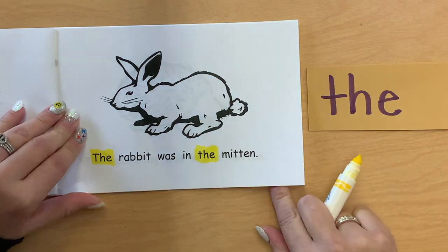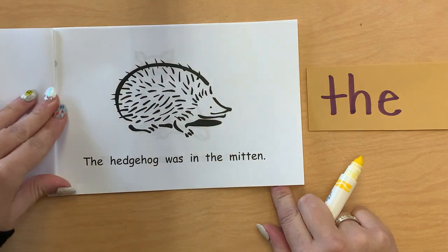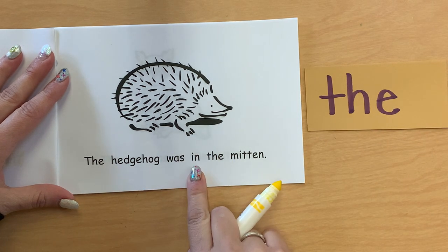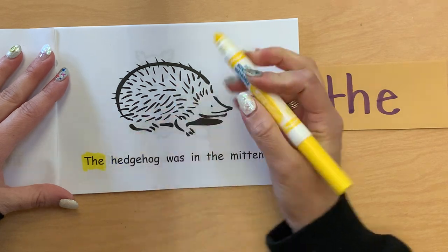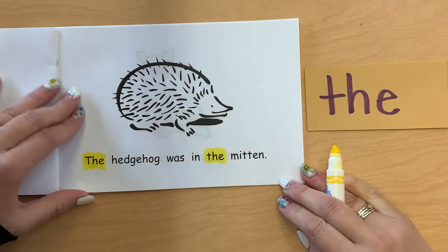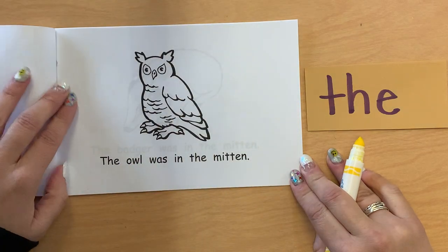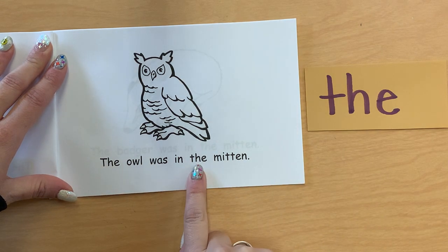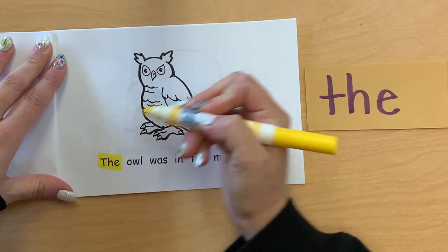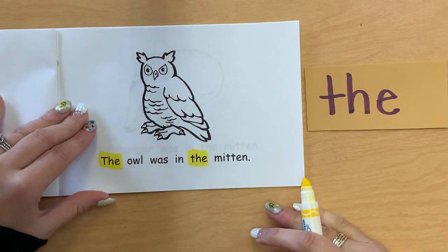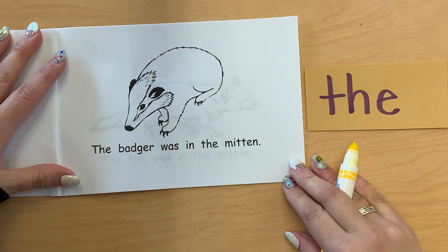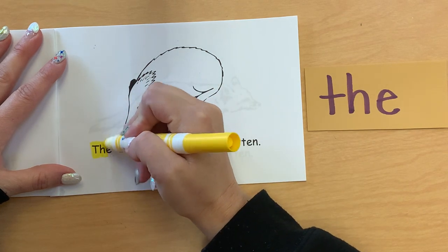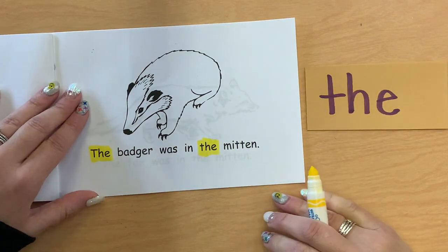Do you remember who came after the Rabbit? The Hedgehog was in the Mitten. T-H-E, T-H-E, I can spell the: T-H-E. Who came after Hedgehog? The Owl was in the Mitten. T-H-E, T-H-E, I can spell the: T-H-E.